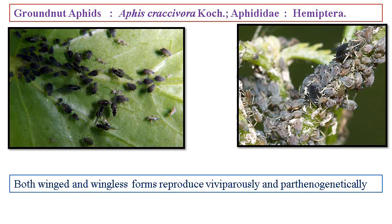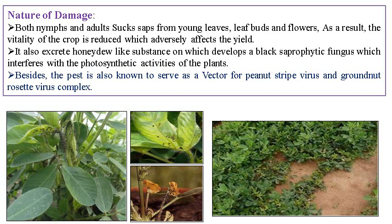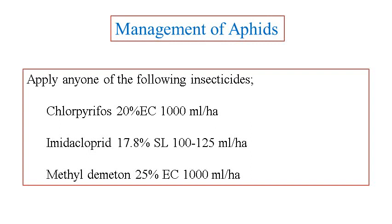Both pink and green forms of the aphid produce viviparous and parthenogenetic offspring, and a heavy reproduction rate is observed. Both nymphs and adults suck the sap from the young leaves, buds, and flowers; as a result, about 30% of the crop yield is reduced. The aphid also excretes honeydew-like substances on which black sooty mold, that is the saprophytic fungus Capnodium fungus, develops and interferes with photosynthetic activity of the plant. Besides this, the pest is known as a vector for peanut stripe virus and groundnut rosette virus complex, also transmitting viral diseases in groundnut. Chlorpyrifos, methyl parathion, and dimethoate can be used against this pest.